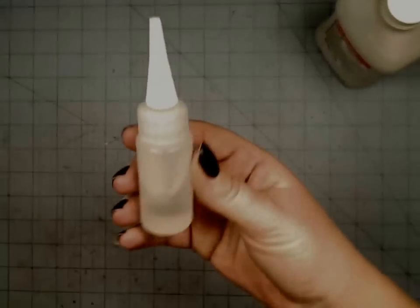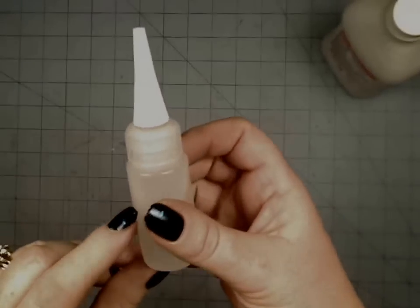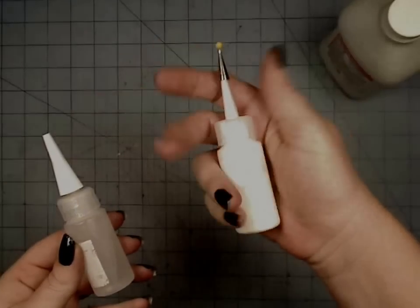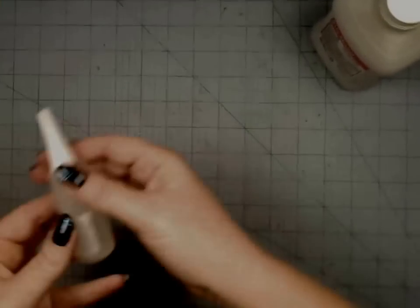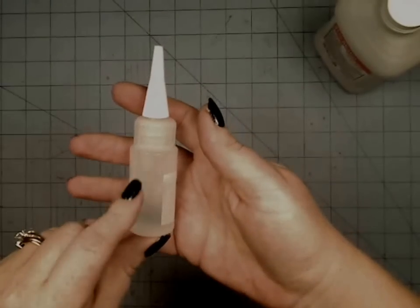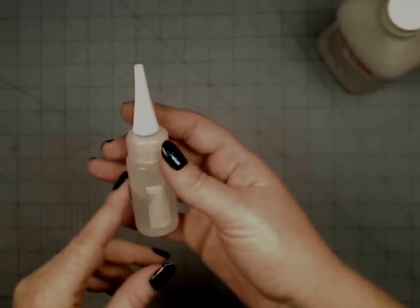And so what I do is I put mine in one of these little Darice bottles, which you guys know that I use—I keep my Scotch Quick Dry in the same little bottle, I just add a glitter tip to it. So I usually buy like a dozen of these at a time, and they have multiple uses.